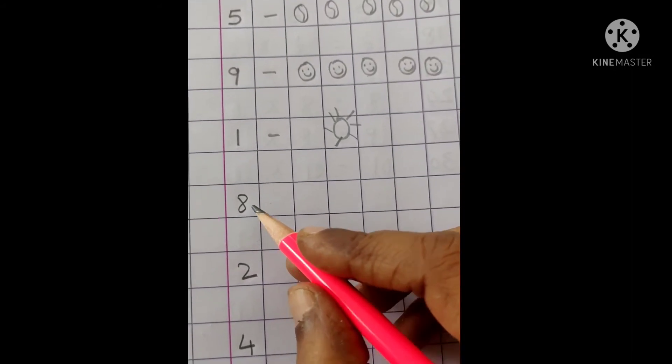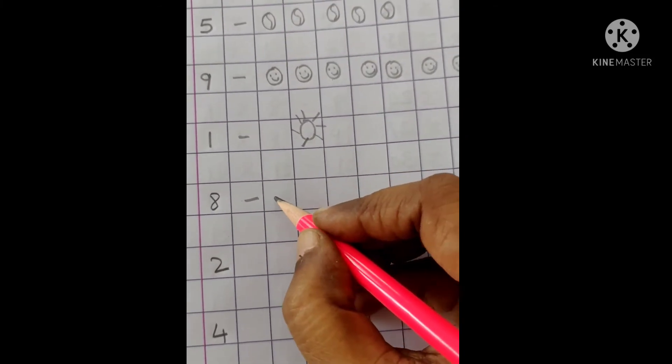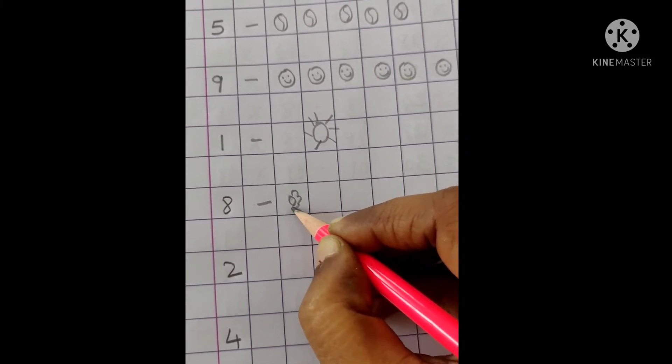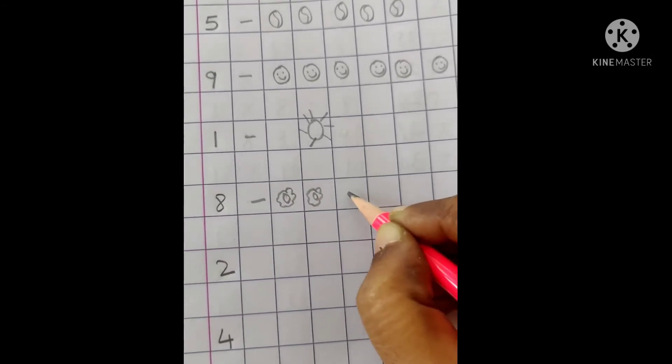So next is letter number 8. Okay children, we will draw 8 flowers. Okay, all can draw any picture you want. See here, 8 flowers.